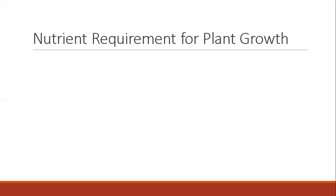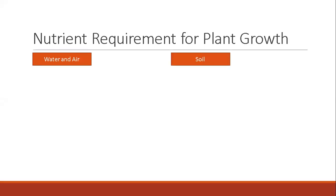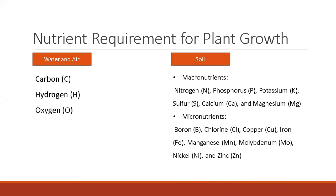Plants require 17 essential elements for growth and development. These nutrients can be obtained from water and air, or can be obtained from the soil. We will focus on the soil nutrient deficiency.